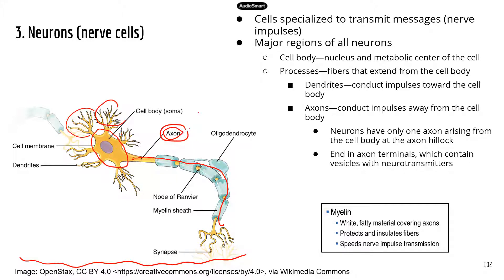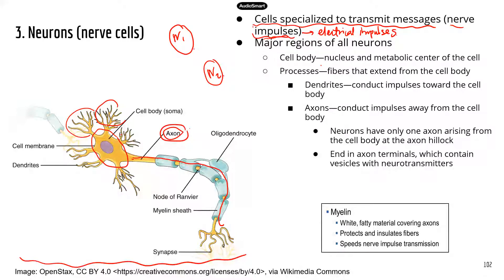These neurons are specialized cells to transmit messages, and those messages are in the form of nerve impulses — electrical impulses. However, when the signal transmits between two neurons, it will become a chemical signal. Because the electrical signal can only be transmitted within each neuron cell. In between them, that's a watery fluid environment, so the electrical signal cannot go through it. The electrical signal will be translated to a chemical signal, and once the chemical signal gets to the second neuron, it will be converted back to electrical signal.